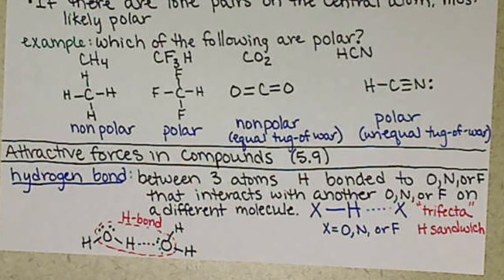Or I might ask, what are the three elements that hydrogen can form a hydrogen bond with? And you would say oxygen, nitrogen, or fluorine.